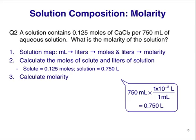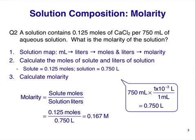We can calculate molarity next. The equation is: molarity equals solute moles divided by solution volume in liters. Inserting our numbers gives us the answer 0.167 M. We'd say this was a 0.167 molar solution. Remember, the uppercase M means molarity, or moles per liter. Not too bad — just one simple unit conversion before we could use the molarity equation.